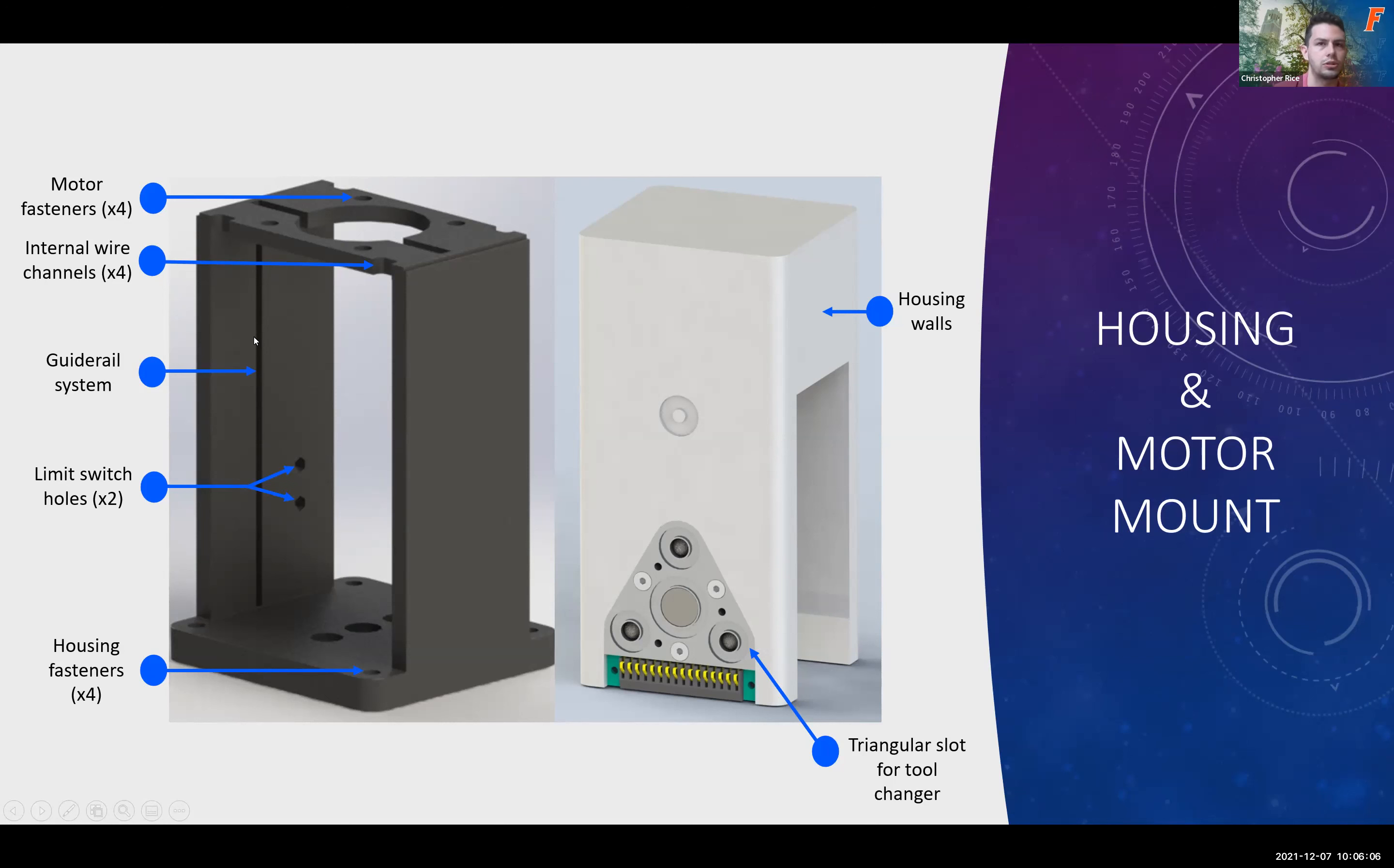Underneath that we have two limit switch holes to fasten the limit switch to the motor mount housing. This height was chosen because this is where the plunger was fully able to dispense liquid without ejecting the tip. At the base of the motor mount, we have four housing fasteners at each corner to safely secure the housing to the motor mount, and we also use threaded heat inserts for that. We also created a triangular slot for the tool changer, just to easily change out the pipette design from the bioreactor. And we also added a mini housing wall on the side of the housing to protect the motor and other electrical components from any testing fluids.